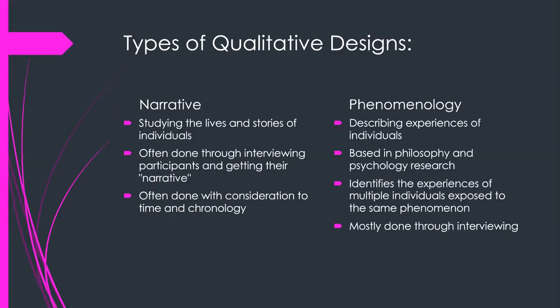When we look at the different types of qualitative designs, most researchers use one of five common ones. The first is the narrative design, which includes studying the lives and stories of individuals — either through interviewing participants and getting their narrative, or through looking at articles, pictures, and documents related to their lives. This is often done with consideration to time and chronology, starting at the beginning of the event and working through as time progressed. The narrative design is often similar to historical records and often deals with historical research.